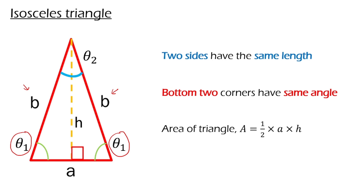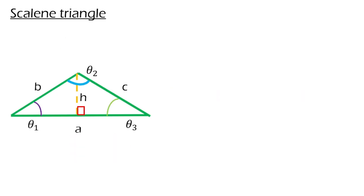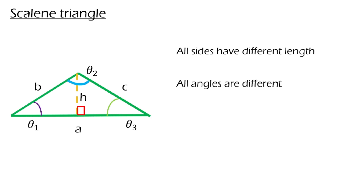Let's move on to the next, which is the scalene triangle. A scalene triangle has three different lengths. Besides that, it also has three different angles. For the area, it is also the same as the previous one: half multiplied by base and height.